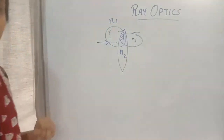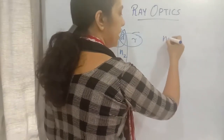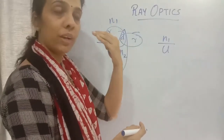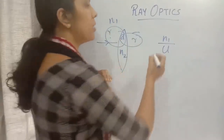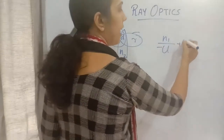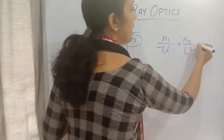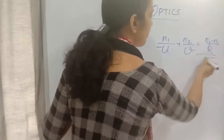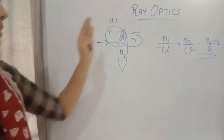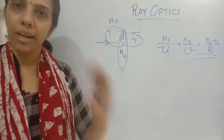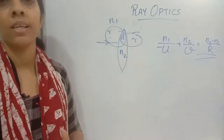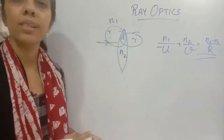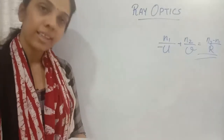The formula for refraction at a spherical surface: if the refractive index of the first medium is n1 and the second is n2, then the formula is n1 divided by minus u, plus n2 divided by v, equals n2 minus n1 divided by r, where r is the radius of curvature. Learn this formula by heart.